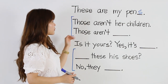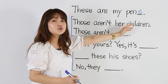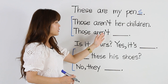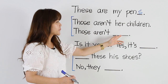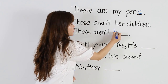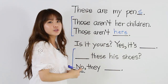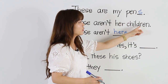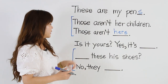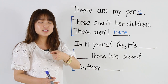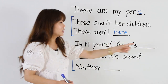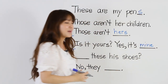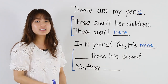Let's look at these two together. 'Those aren't her children.' We can also say 'those aren't hers' — we don't need a noun when we use the possessive pronoun 'hers', but we do need a noun with 'her'. Then: 'Is it yours?' Yes, there's no noun here, so we have to say 'mine': 'Yes, it's mine.'